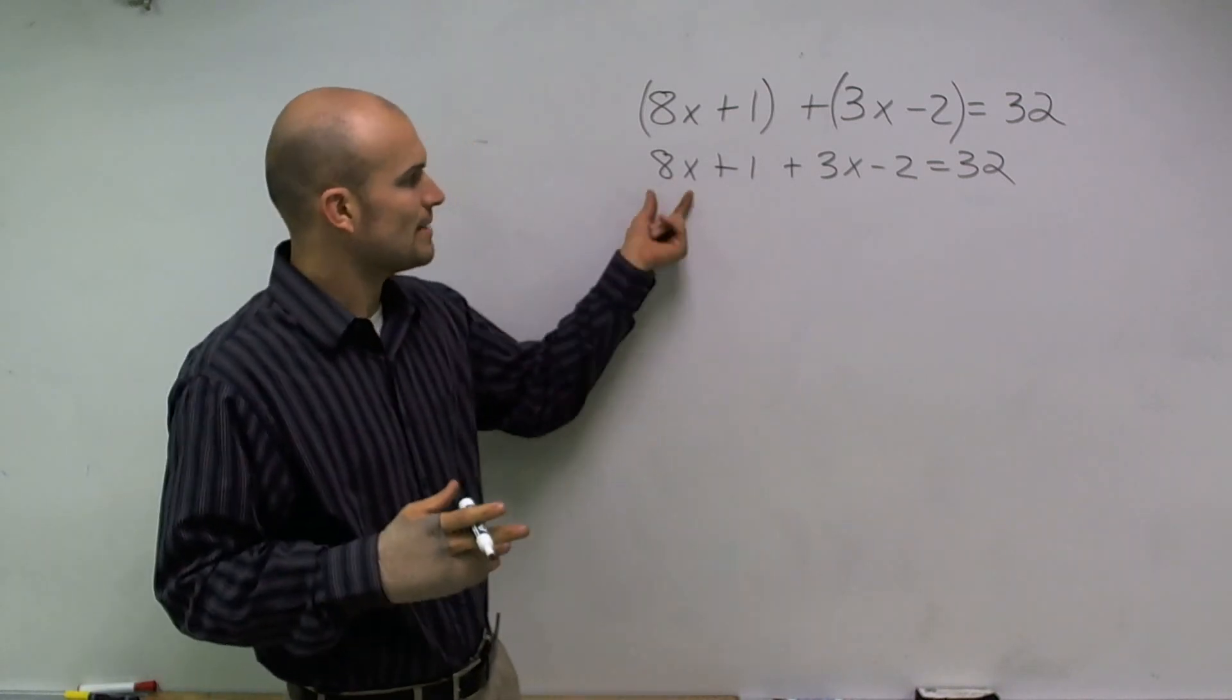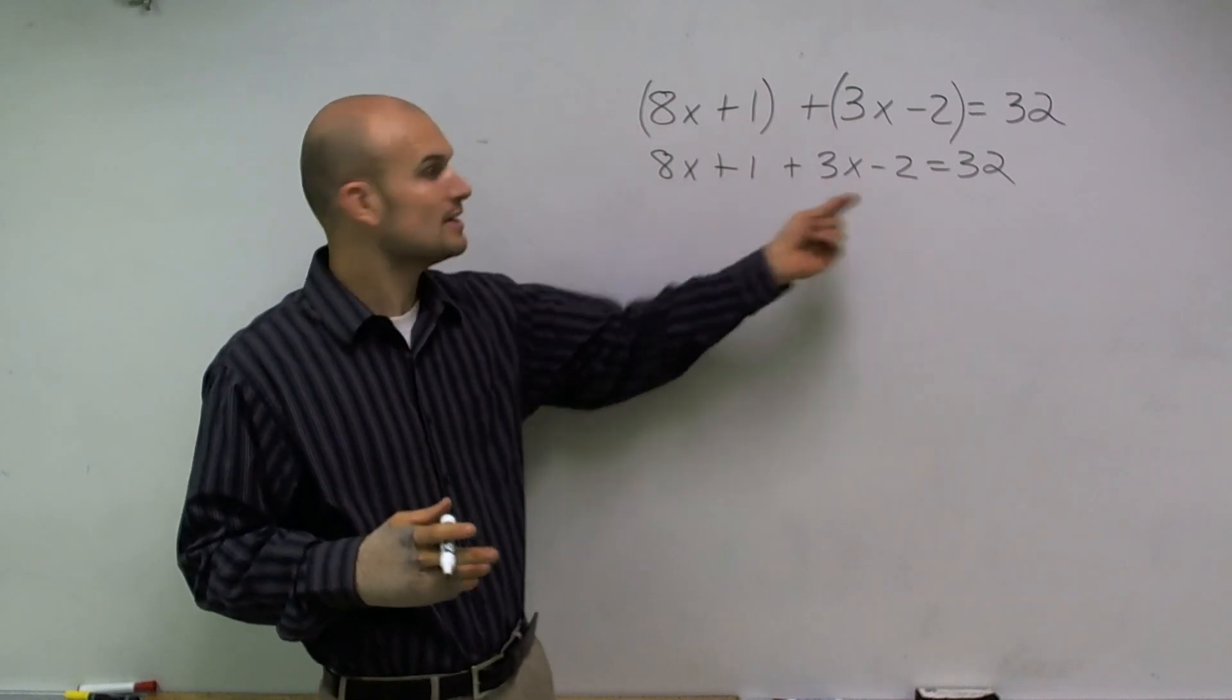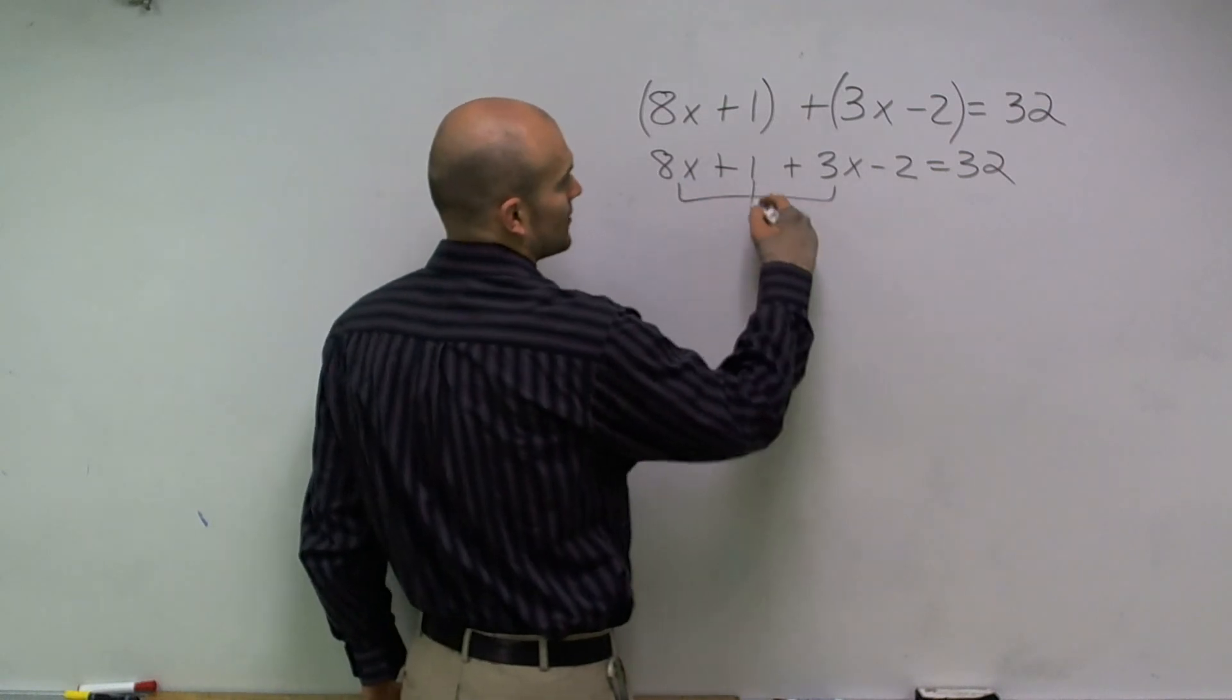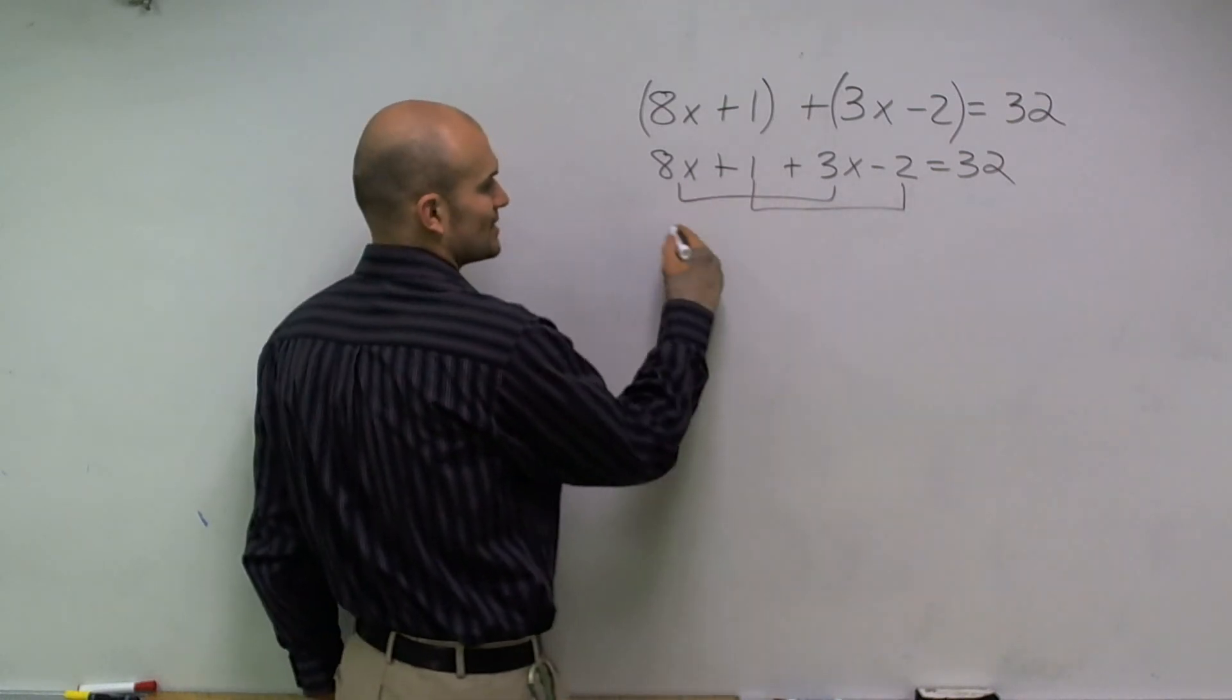I can only combine my variables with my terms that are x together and my numbers together. So what I'm going to do is actually rewrite my equation with my like terms next to each other.